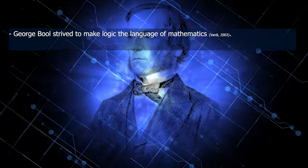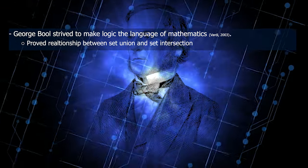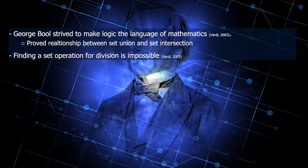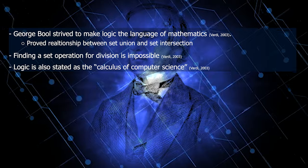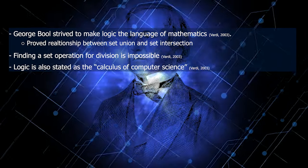George Boole strived to make logic the language of mathematics by proving relationships between set union and set intersection. However, it can be argued that he was forcing such ideas, as finding the set operation for division is impossible. Logic is also stated as a calculus of computer science, suggesting it is the link between mathematics and computing, rather than solely belonging to one subcategory.